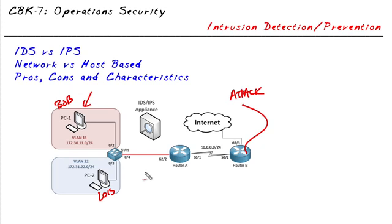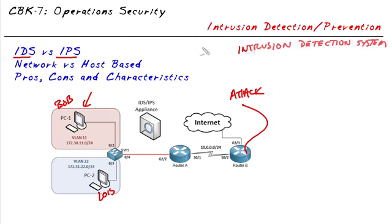A very common method we can use to identify malicious traffic is something called IDS and IPS — intrusion detection or intrusion prevention systems. Here's the biggest difference. With an intrusion detection system, we're simply going to plug this device into the network. As an example, let's take all of VLAN 11's traffic and, at the switch, copy it out to the network appliance.